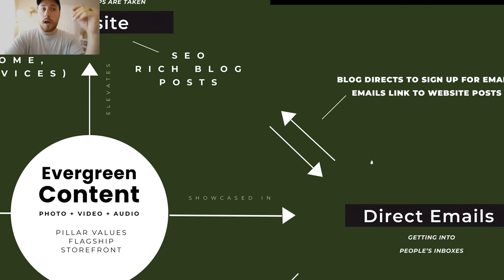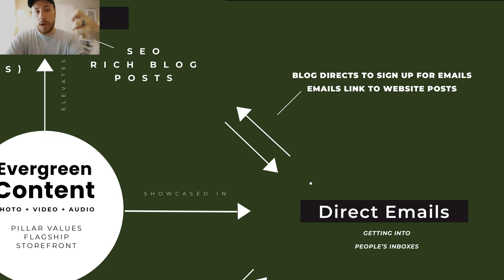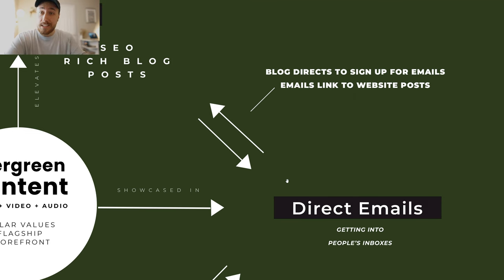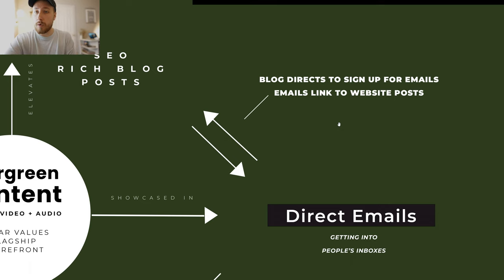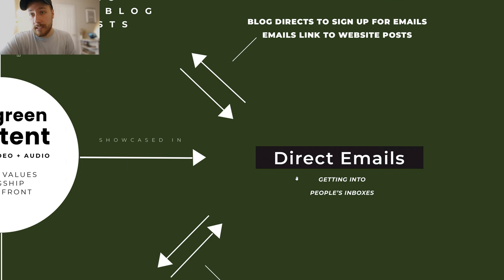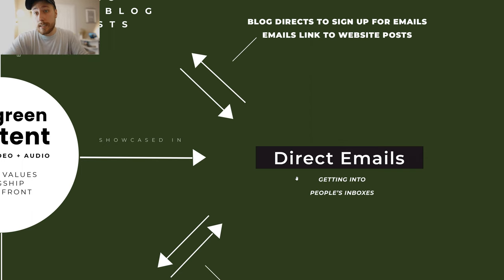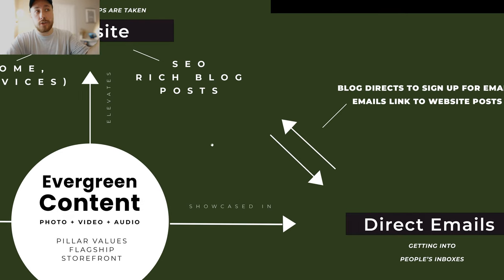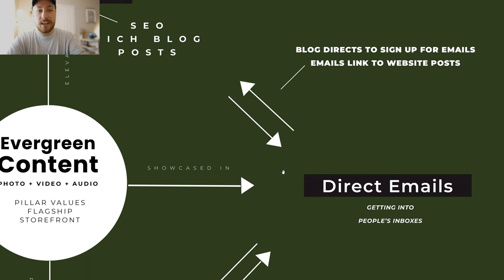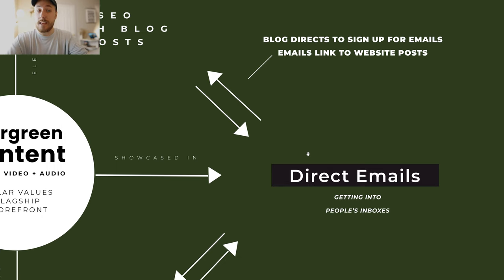When you have SEO-rich blog posts, this gives you a direct opportunity to have content for your email list. A blog post goes up on your website, directs people to sign up for your email list, and your emails link back to your blog posts — they both reference each other. The thing about emails that's really effective is that you're getting directly into people's inboxes. When people wake up and look at their inbox, you're landing there with your information so they can keep in mind what you're doing. Your evergreen content is featured in your website's SEO blog posts and also showcased in your email list.